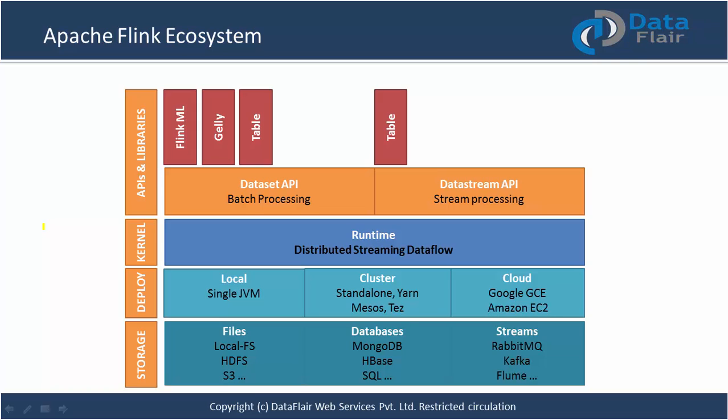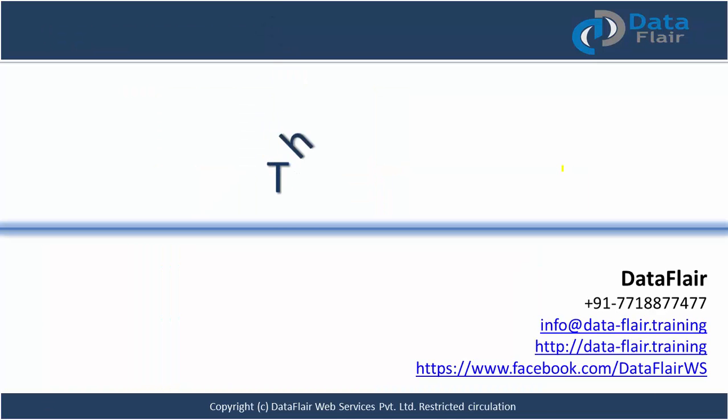For streaming, to collect and process data in streams, Flink can handle data from RabbitMQ, Kafka, and Flume. This is the complete ecosystem of Apache Flink.